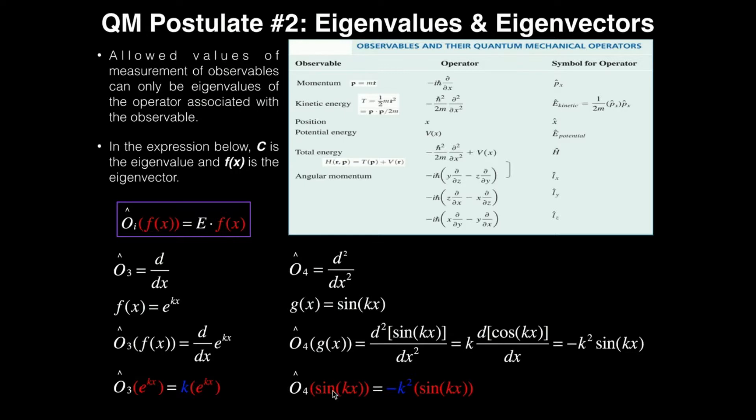Notice, when I write out this complete expression, operating on sine of kx is equal to negative k squared times sine of kx. Do we have sine of kx on both sides? The answer is yes. And you could effectively think of canceling those out, even though that's not mathematically valid here. So that means this negative k squared, this is a possible measurement of whatever observable is represented by O4. Negative k squared is also the eigenvalue of this operator, and that therefore means it's valid, because you get sine of kx on both sides.